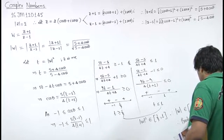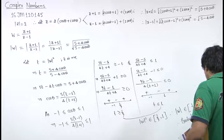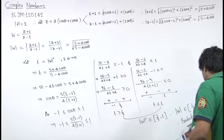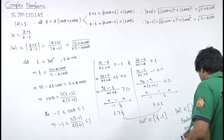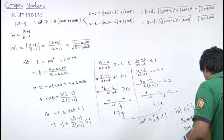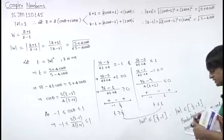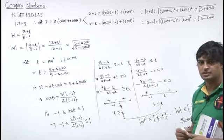Product of minimum and maximum value of mod w is 1 by 3 into 1, which is 1 by 3. This is the answer.